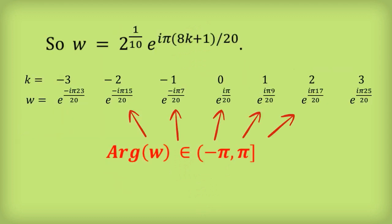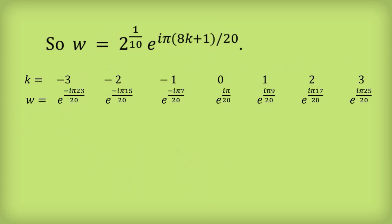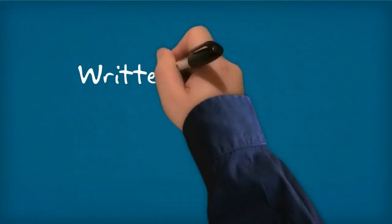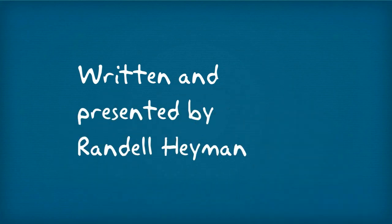So our convention tells us to ignore k equals minus 3 and k equals 3, and we're left with the middle 5 values on the screen. Putting back the 2 to the power of 1 tenth, we can write out the final answer: the 5 complex numbers that are the solution to the problem. That's it for Complex Roots Made Easy — I hope you found it useful. Thank you.